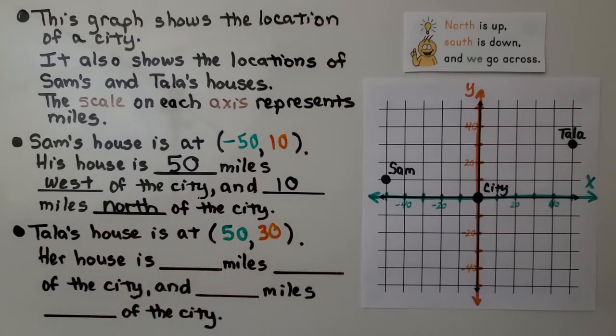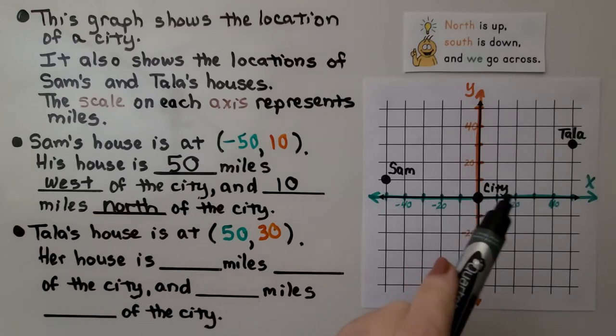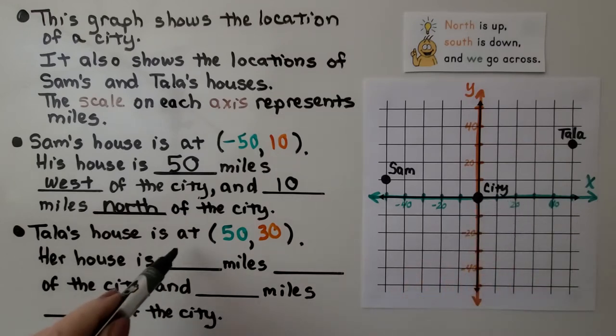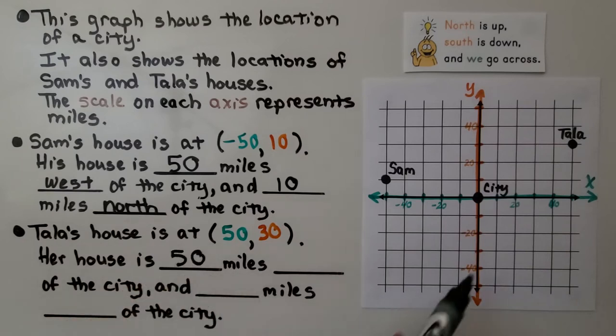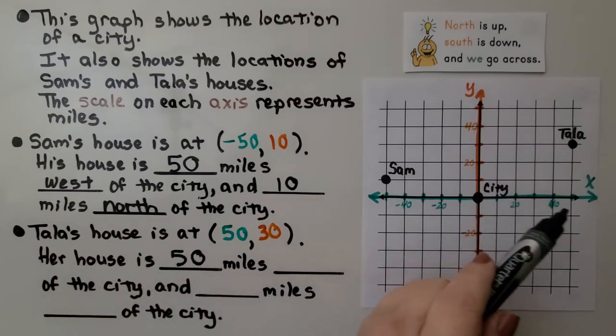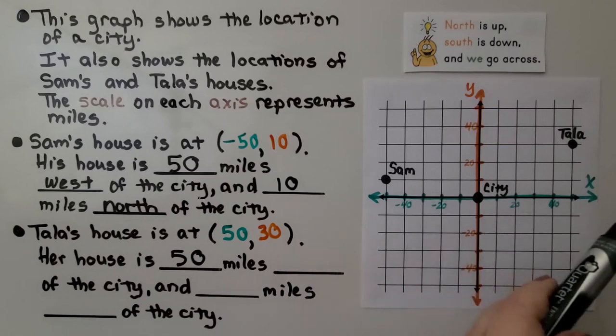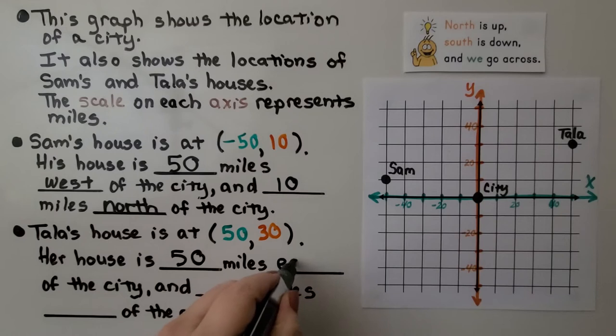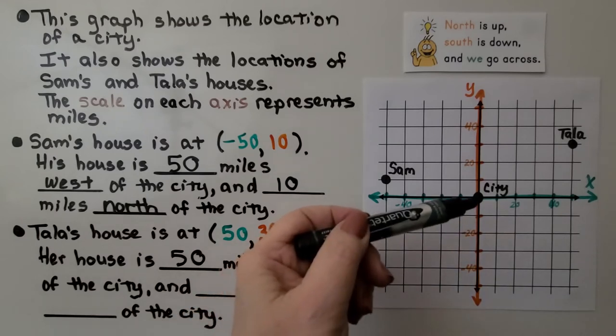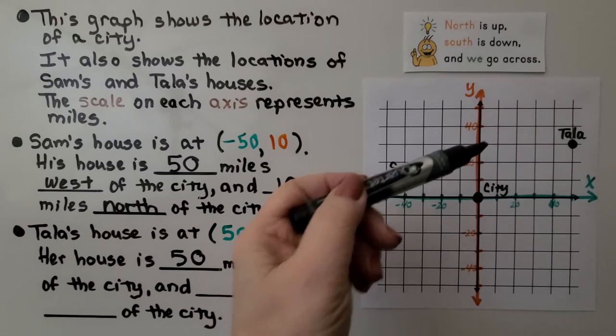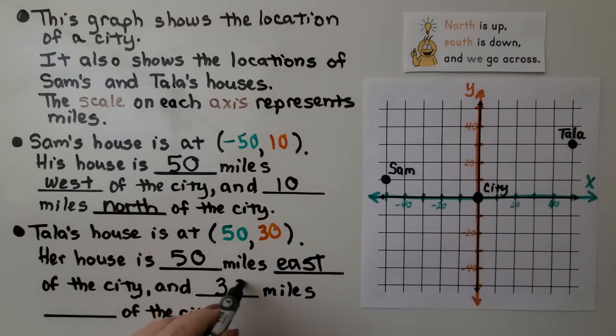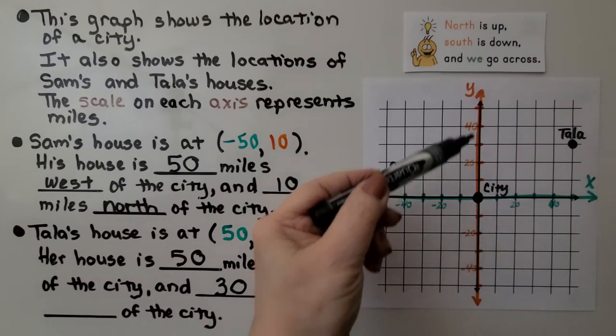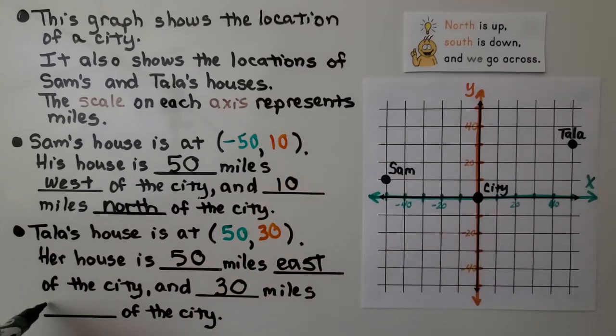Her house is blank miles from the city. So, it's 10, 20, 30, 40, 50. And that would be east of the city. If we go across, that's west, that's east. She's 50 miles east of the city. And she's 10, 20, 30 miles, and that's north. We're heading north. So, that's north of the city.